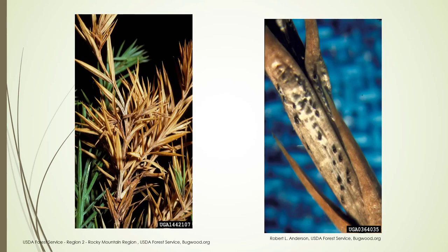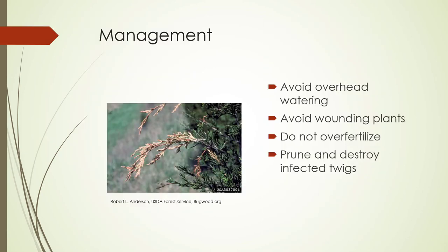Here's a very close up view. On the left you can see a juniper that's got the disease, and if you look closely you'll see the fruiting bodies on the right. With all of these diseases, avoiding overhead watering is key. You want to avoid wounding the plants, do not over-fertilize them, and then prune and destroy infected twigs — which if you've worked with juniper, you know that's no easy task.